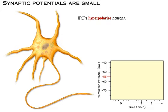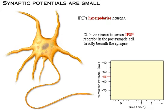Inhibitory post-synaptic potentials hyperpolarize neurons. Click the neuron to see an IPSP recorded directly beneath the synapse in the post-synaptic cell.